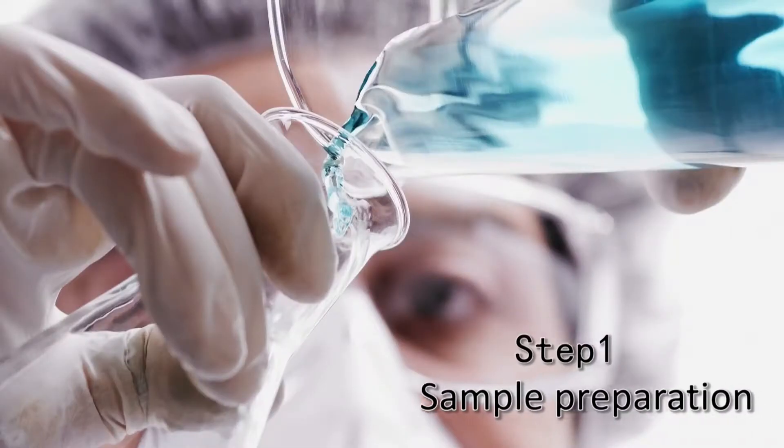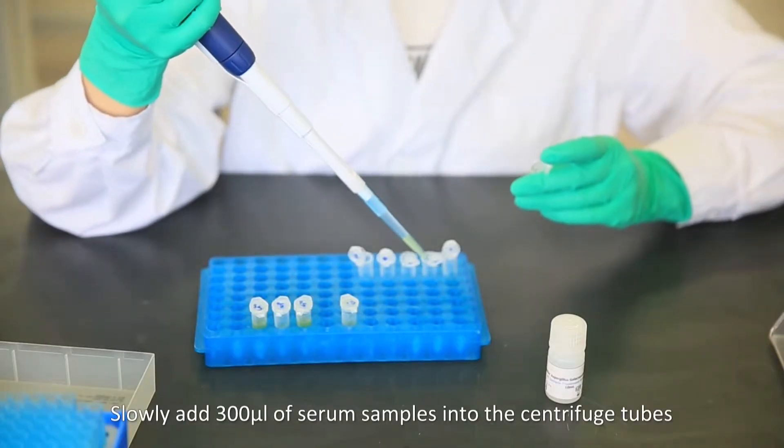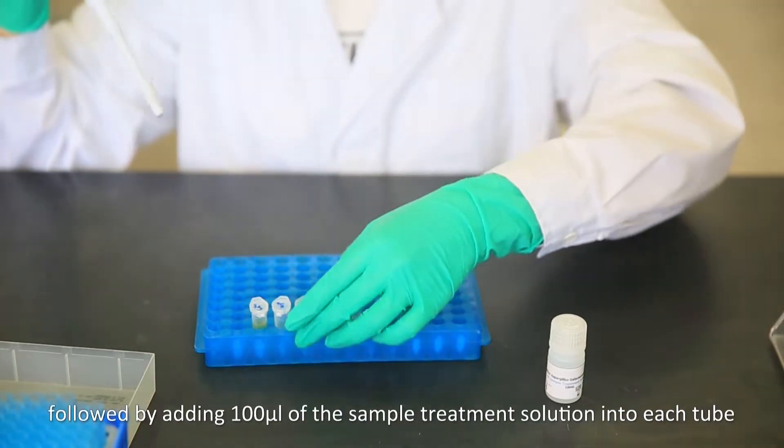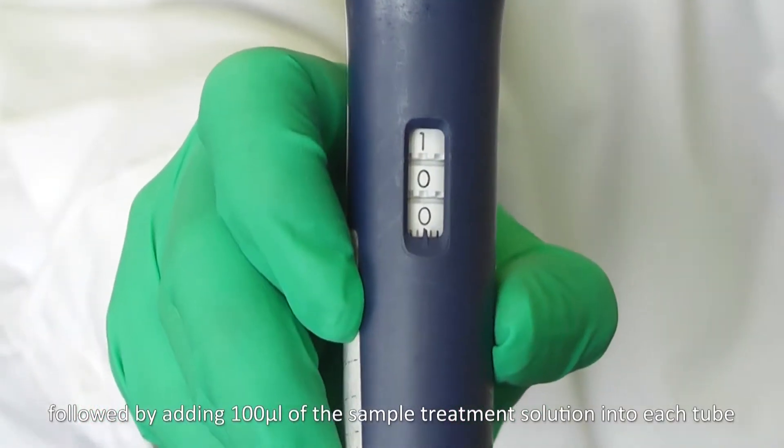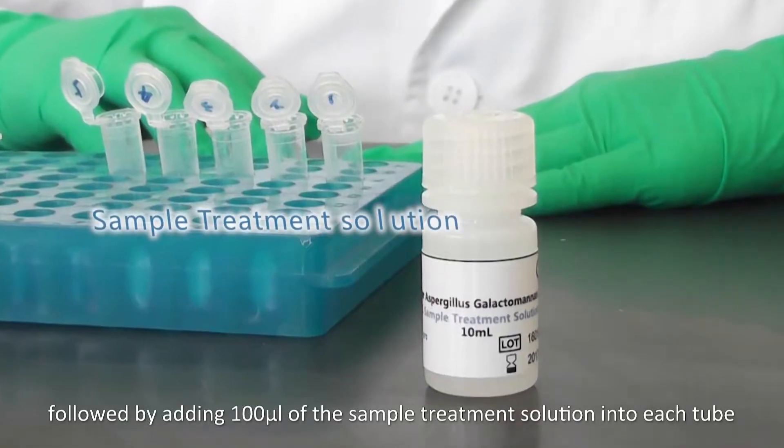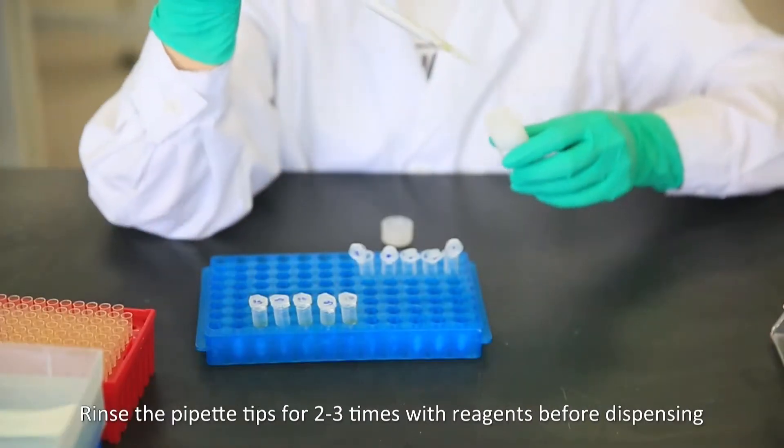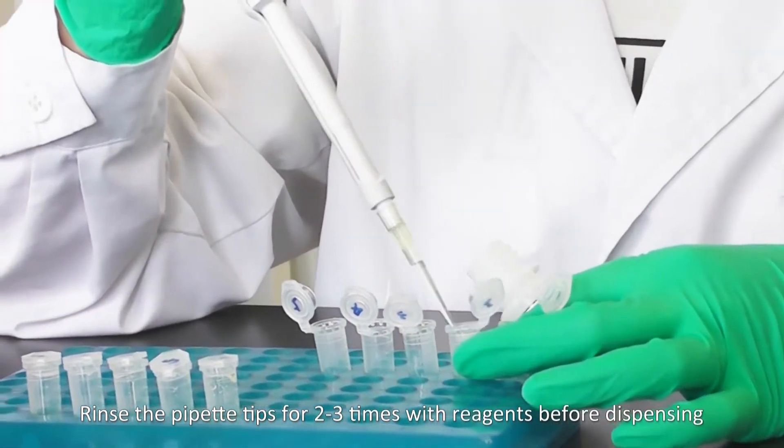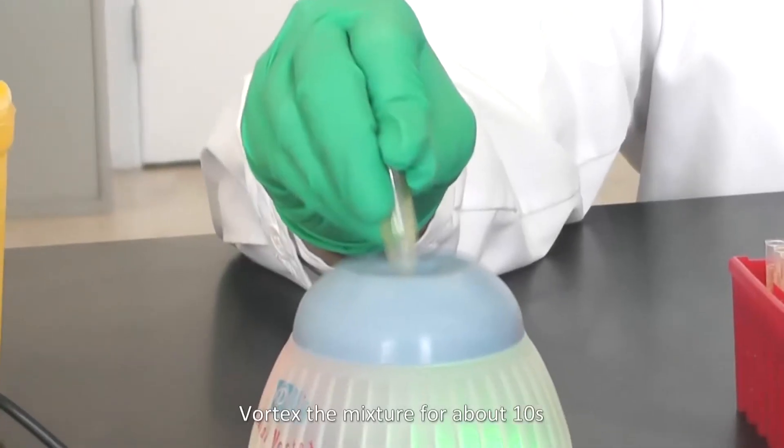Sample preparation: Slowly add 300 microliters of serum samples into the centrifuge tubes, followed by adding 100 microliters of the sample treatment solution into each tube. Rinse the pipette tips for 2-3 times with reagents before dispensing. Vortex the mixture for about 10 seconds.